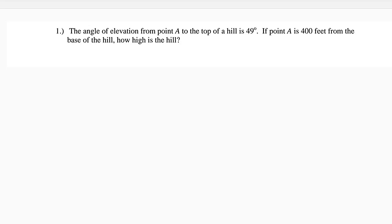Alright, here is question number one. The angle of elevation from a point A to the top of a hill is 49 degrees. If point A is 400 feet from the base of the hill, how high is the hill?